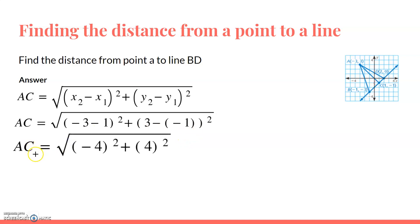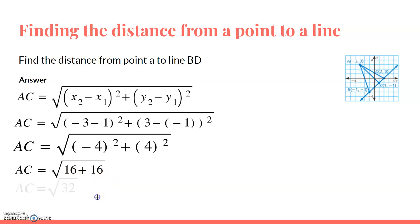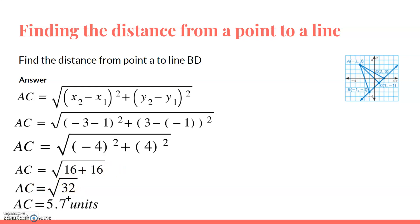Now when we plug in our values and simplify them, AC is equal to the square root of (negative 4) squared plus 4 squared. When we simplify both of these by squaring them, we get AC is equal to the square root of 16 plus 16. Simplifying that by adding them up, AC is equal to the square root of 32. When we take the square root of that, that gives us AC is equal to 5.7 units. So the distance from point A to line BD, or segment BD, will be 5.7 units.